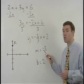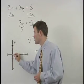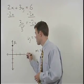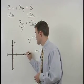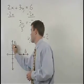From there, we take our slope of negative 2 thirds, so we go down 2 and to the right 3 to plot our second point, and we graph the line.